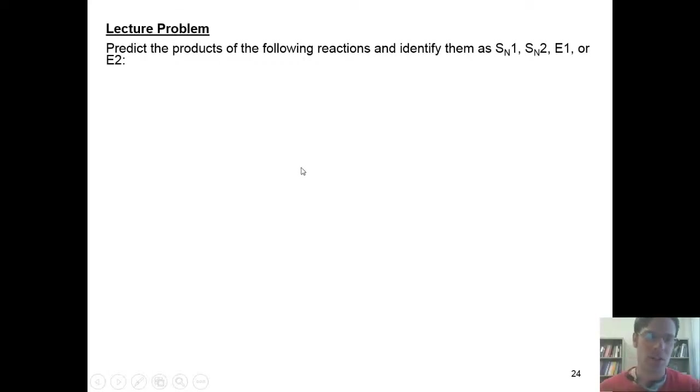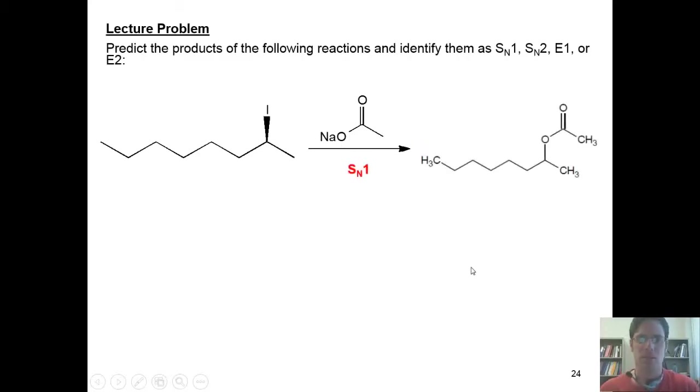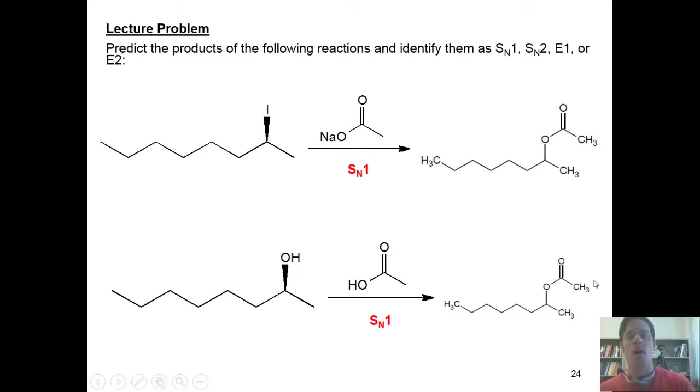Here are some more substitution elimination examples. This first example, I'm given the same molecule reacted with sodium acetate. It undergoes an SN1 reaction to give me this product right here. In the second example, I'm given this molecule reacted with acetic acid. It undergoes an SN1 reaction and gives me this product. If you want to know why, I'll show you on the board right now.